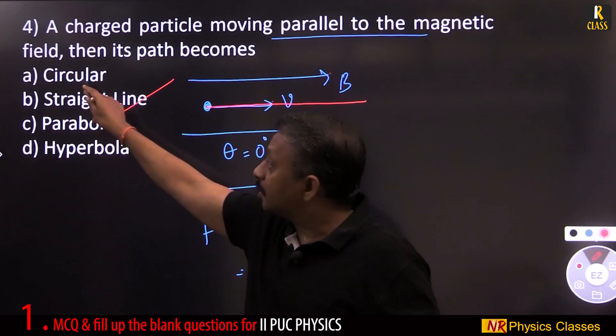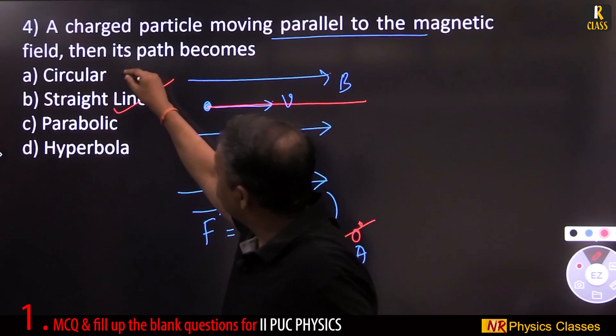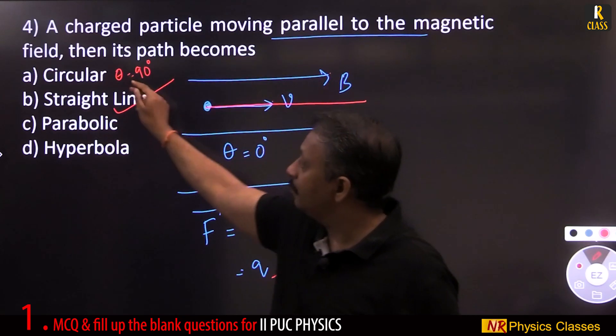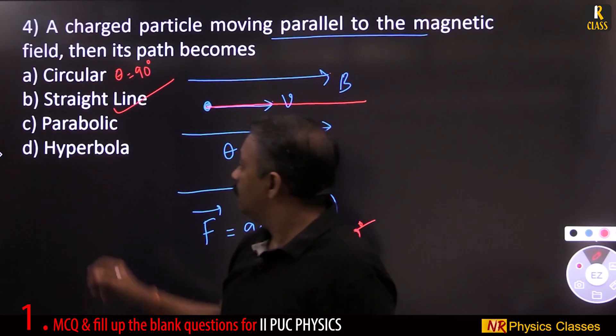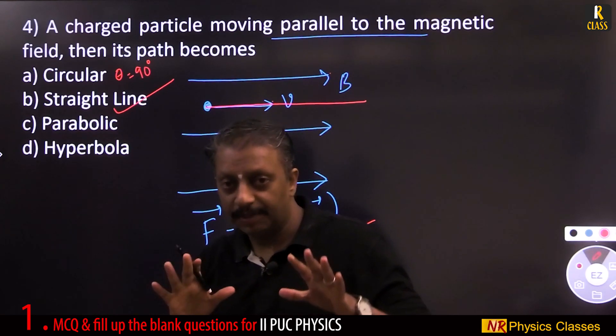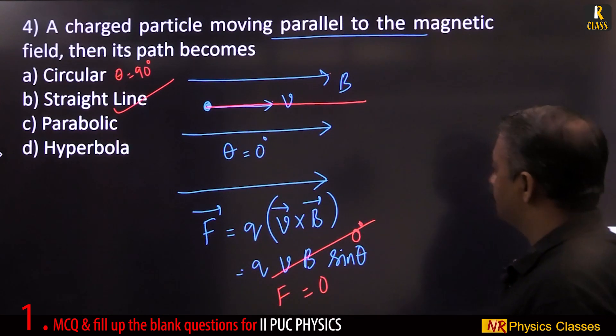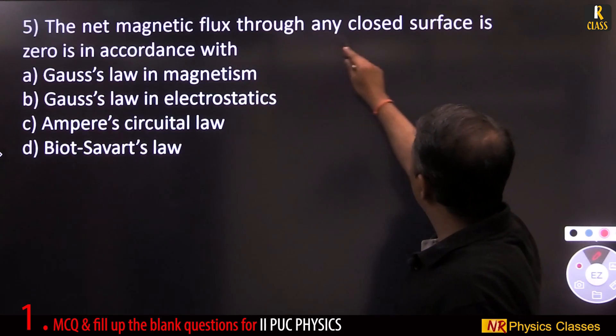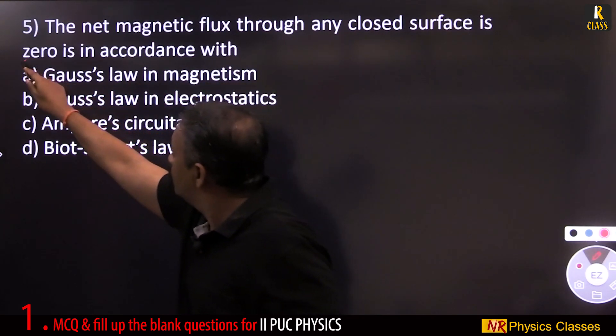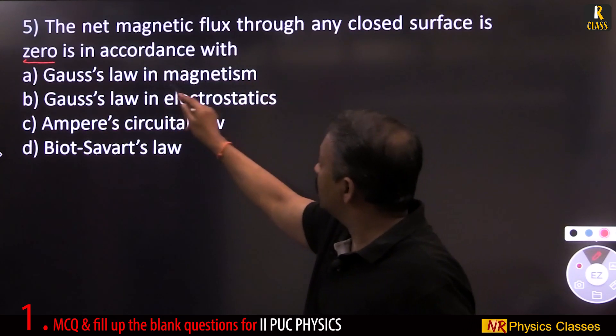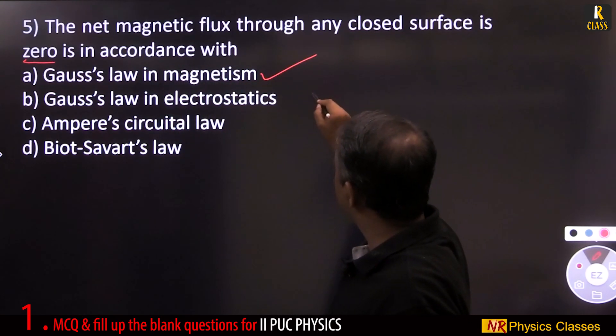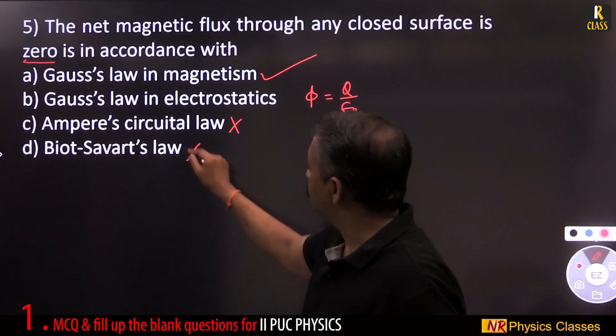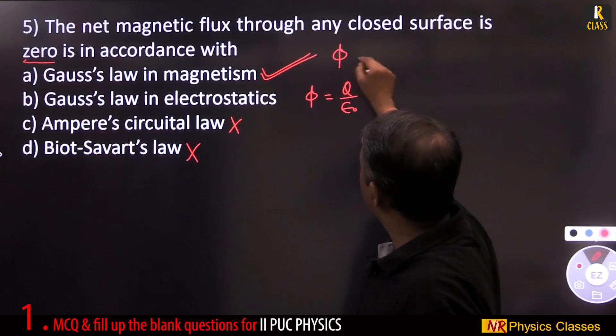When do we get circular? If theta equal to 90 degree, means if velocity is perpendicular to magnetic field, we get circular. Parabola, hyperbola, not with respect to magnetic field. The net magnetic flux through any closed surface is 0, is in accordance with Gauss law in magnetism.